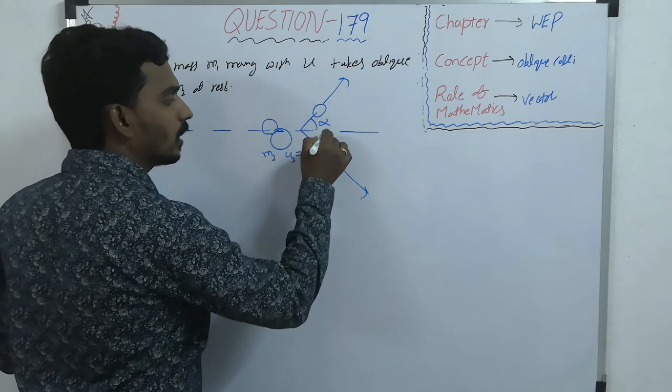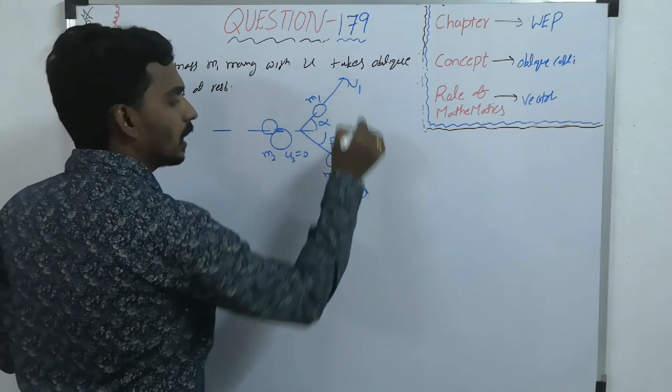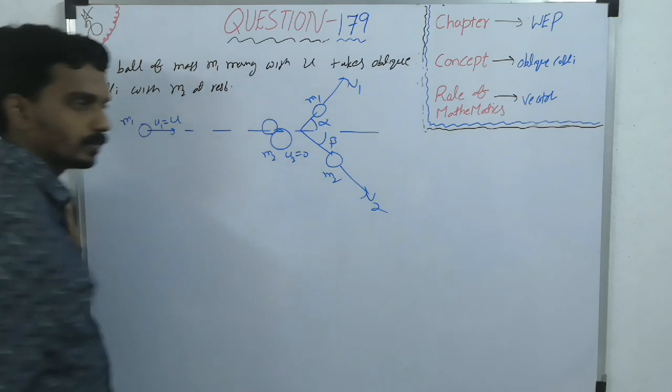Let us take this is like alpha, this is like beta, M1, M2 and the velocities are let us take V1, V2.